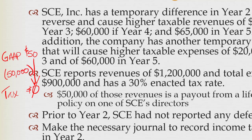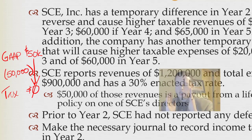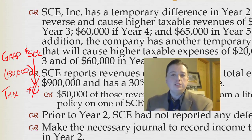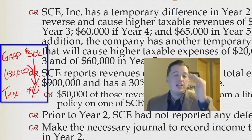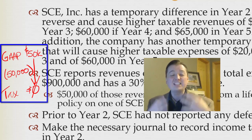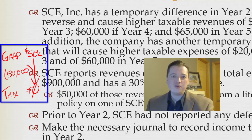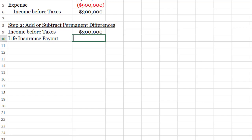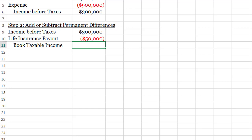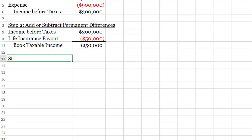Please get in the habit of drawing this simple graph: GAAP number, tax number, how do I get from GAAP to tax — that's my adjustment. If you can be comfortable with that, everything else will flow so much easier. That's one of our key concepts, so make sure you're comfortable with it. Let's take that negative $50,000 and put it into the spreadsheet, then calculate book taxable income by summing those two up. This is what I think I should have to pay taxes on for GAAP purposes.